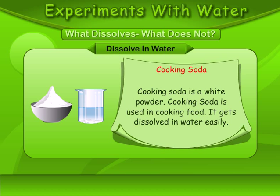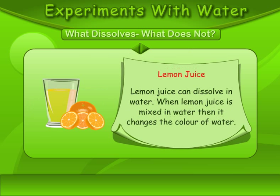Cooking soda is a white powder used in cooking food, and it gets dissolved in water easily. Lemon juice can also dissolve in water — when lemon juice is mixed in water, it changes the color of the water.